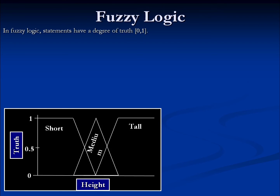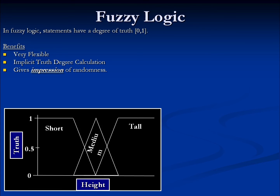Fuzzy logic extends the ideas of first-order logic one step further by removing the requirement that values must be either true or false, and instead allows them to be true, false, or any value in between — a sliding scale, a truth value, between 0 and 1. This introduces even greater flexibility, and whereas before we had implicit rules, now we have implicit truth degrees. Because small changes in the input can result in very large changes in results, this can give the impression of randomness or emergent behavior. But make no mistake, fuzzy logic is not random — it is 100% completely deterministic. However, from a user's perspective, it may appear to be random or at least not predictable. The drawback is that it's even slower and uses more resources, though this is less pronounced today than it was in the past.